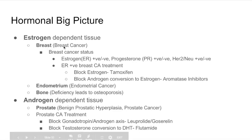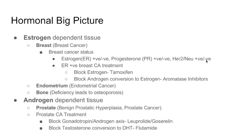Breast cancer is classified by immunohistological staining — what the cancer cells actually express. Do they express estrogen receptors (ER positive or negative)? Progesterone receptors (positive or negative)? And HER2-neu, a tyrosine kinase receptor — positive or negative? This classification matters because we can treat breast cancer based on these receptors. For estrogen receptor-positive breast cancer, the goal is to block estrogen: either block it directly with tamoxifen, or block the conversion of androgens to estrogen using aromatase inhibitors.